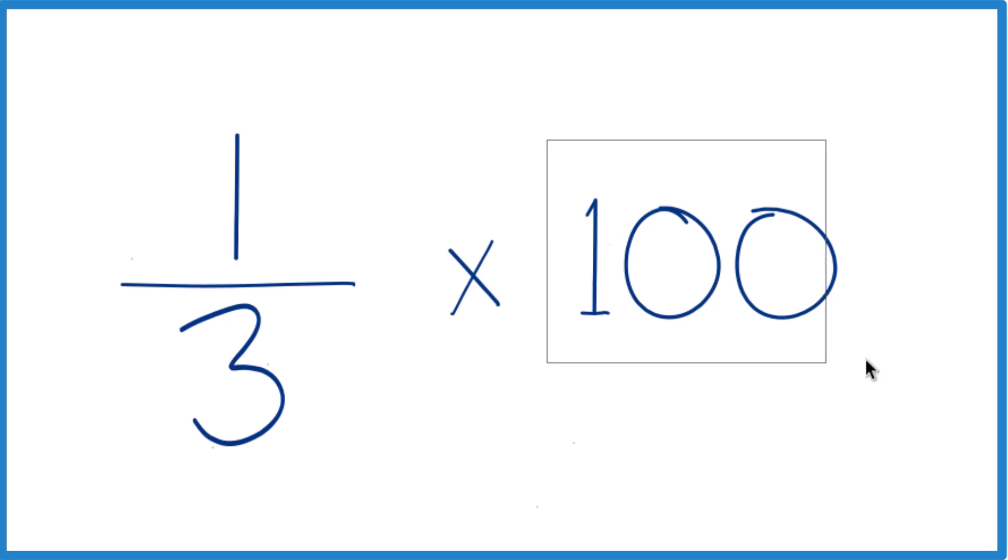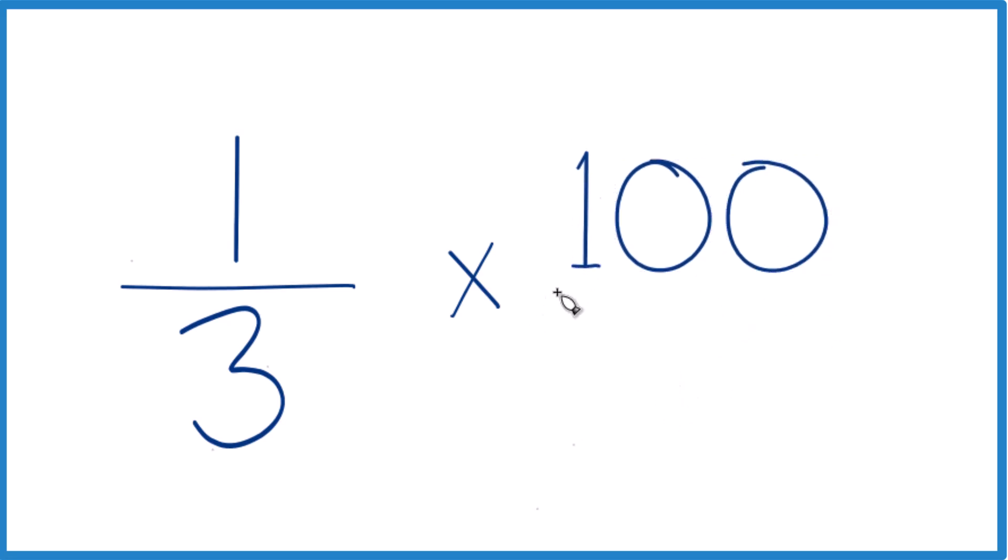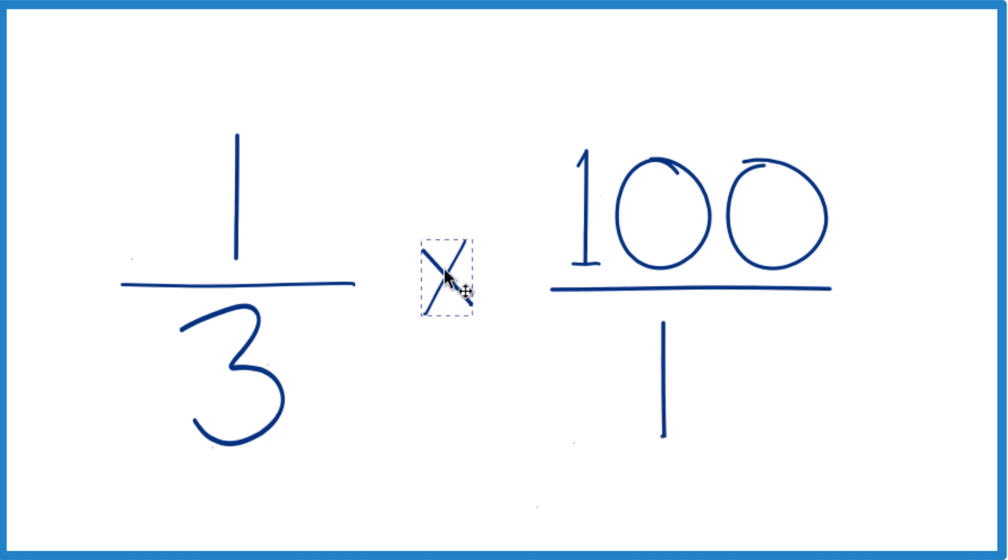And for the 100, let's call that 100 over 1. We're dividing by 1, so it's still 100, but now we're multiplying a fraction by a fraction. That's a lot easier.